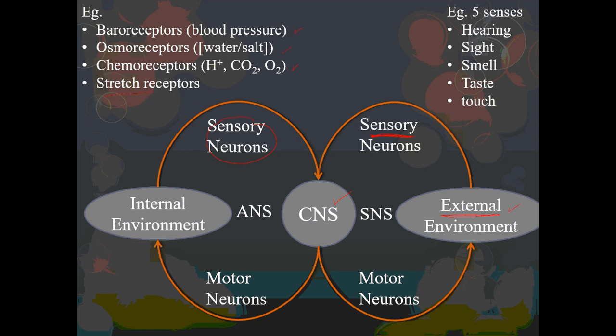If we have a muscle or tendon that is being stressed, that information from the internal environment is sent to the central nervous system. Then what you need is some sort of response in order to minimize the stretching of those muscles and tendons so you don't have damage. Motor neurons will send information to muscles, and that will minimize the stretching and minimize the potential for harm.